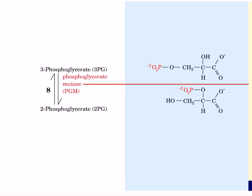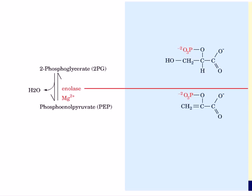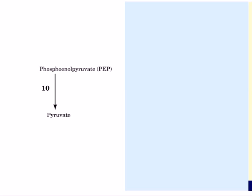The ninth reaction is the conversion of 2-phosphoglycerate to phosphoenolpyruvate. This reaction is catalyzed by enolase and it requires magnesium ion. 2-phosphoglycerate is dehydrated to form phosphoenolpyruvate and water.